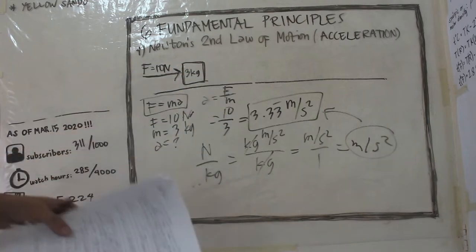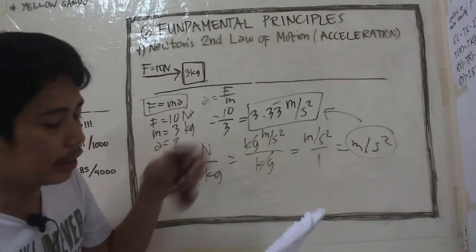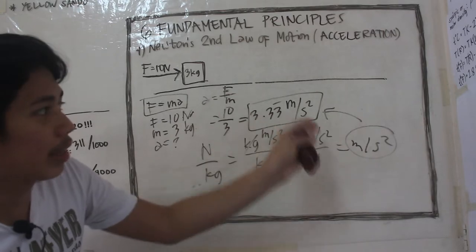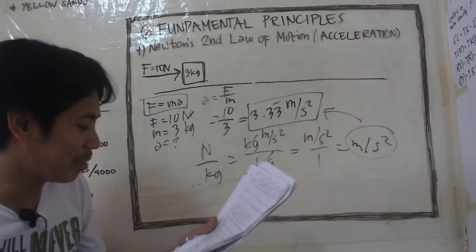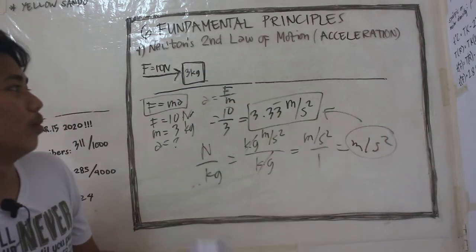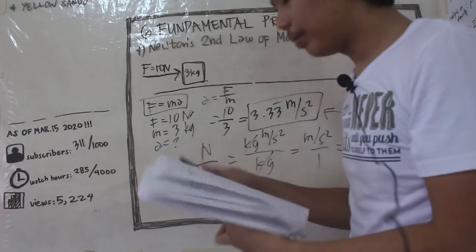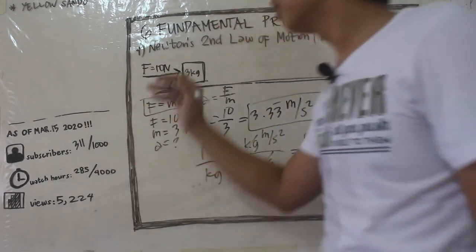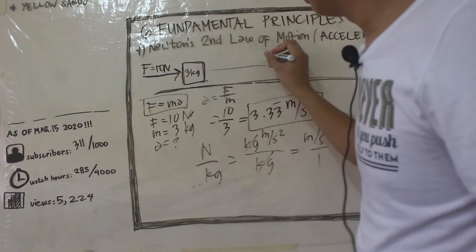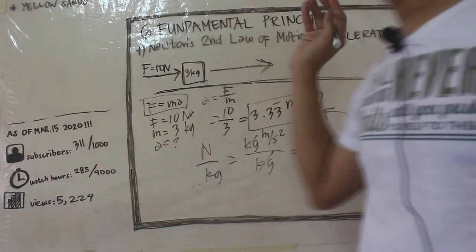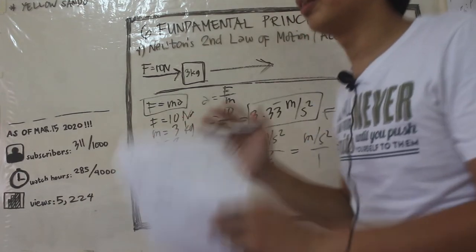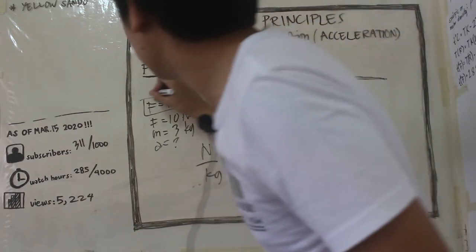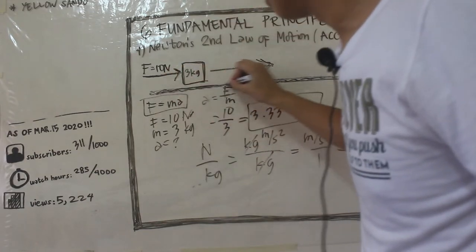Take note lang guys na yung force at yung acceleration ay same ang direction nila. Also, assume natin na frictionless yung surface. Kapag frictionless yung surface, yung box natin ay patuloy lang siyang mag-move in this direction — yan yung sinabi ng Newton's first law of motion, which is the law of inertia. How about if may friction dito — hindi frictionless yung surface, let's say rough surface?